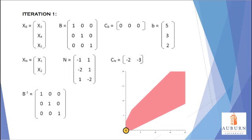Since the A matrix had three rows, we assigned three decision variables to be the basic variables so that when we form the B matrix, it makes a square matrix. The B matrix is formed from the column vectors in A that are associated with each of the decision variables that we chose to be the basic variables.